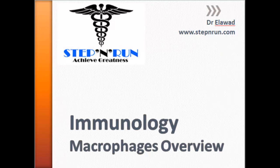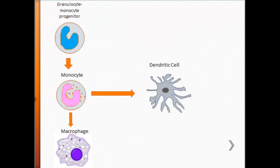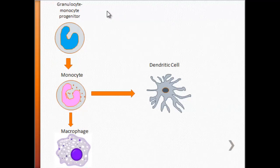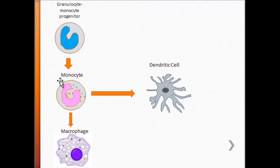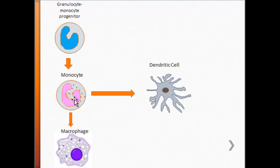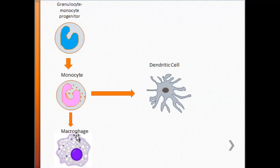Let's remind ourselves where macrophages come from. We have our monocyte, which came from our granulocyte monocyte progenitor, which in turn came from our myeloid progenitor, which in turn came from our hematopoietic stem cell. Once we have this monocyte, it circulates in the blood and moves into the tissue where it is required, and under such circumstances it either becomes a dendritic cell or it differentiates into our macrophage.